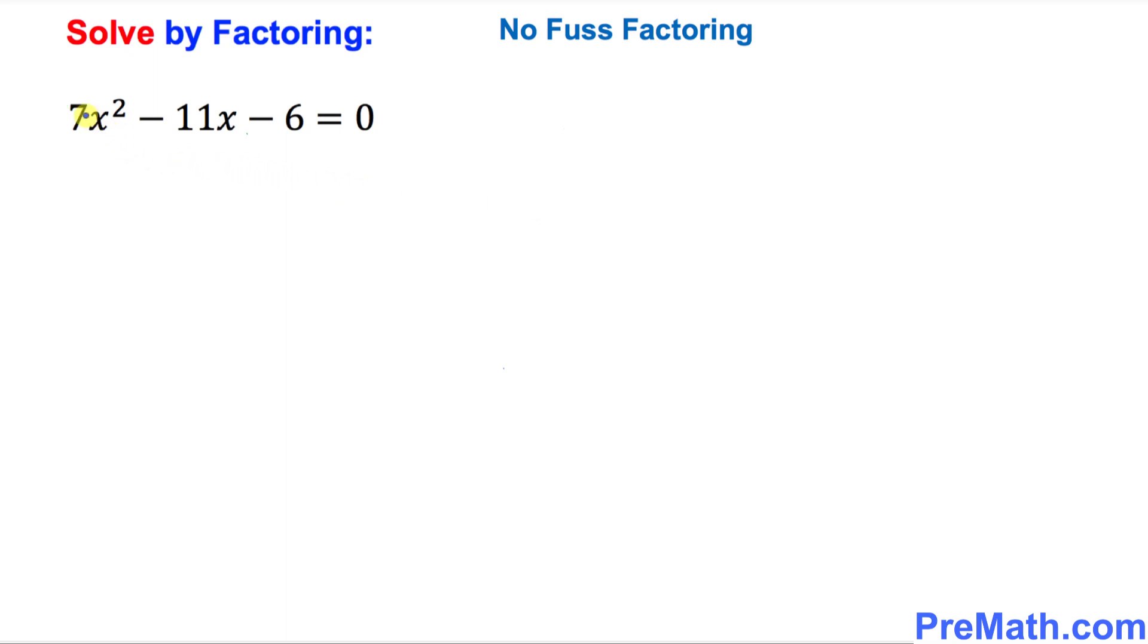So here is our very first step. I want you to multiply these two end numbers. Right now over here, the number on this side is 7 and this one is negative 6. I want you to create a rainbow. Multiply these two numbers. And here at the very same time, I have put down this X-factor. That means something looks like an X. So I want you to multiply once again, 7 times negative 6 is negative 42 on the top.